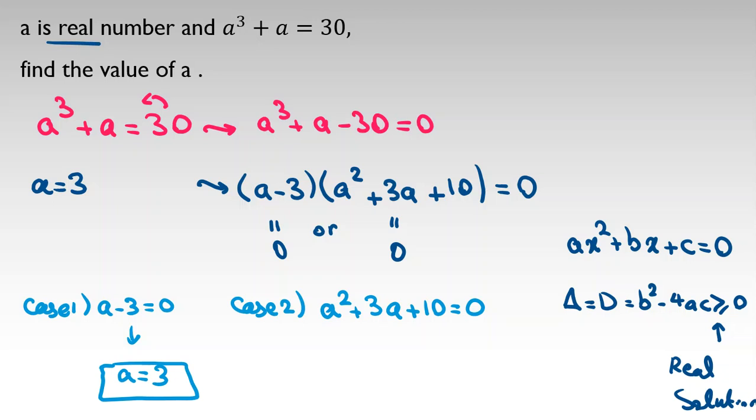Here, b squared is 3 squared minus 4 times 1 times 10, which equals 9 minus 40. That's negative 31, less than zero, so here we don't have any real solution. Our only answer is a equals 3.